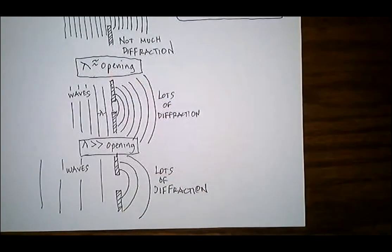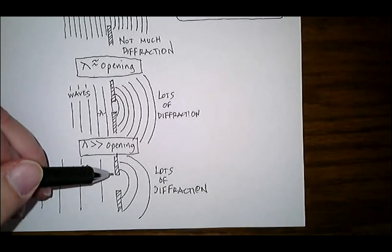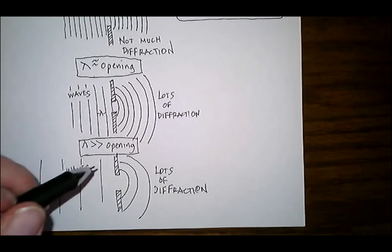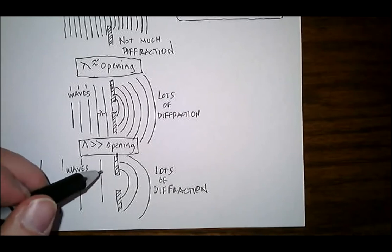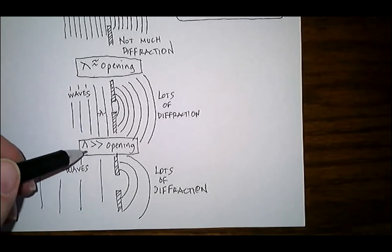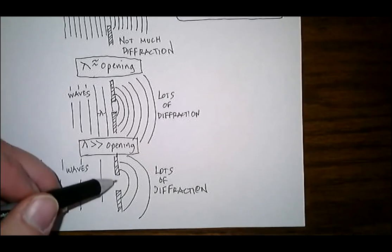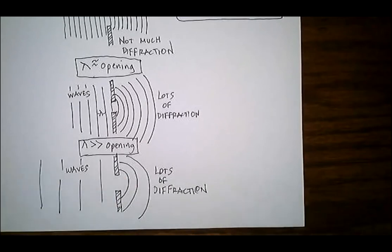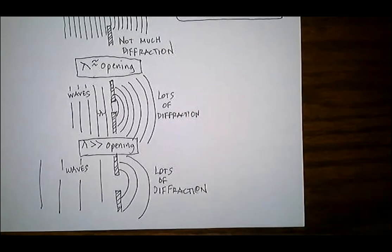So if someday you're a civil engineer designing the opening to a harbor, make sure that opening is no bigger than the normal wavelength of the waves coming in, because you want diffraction to dilute the energy — it moves the energy around a little bit.